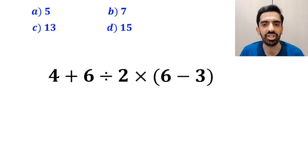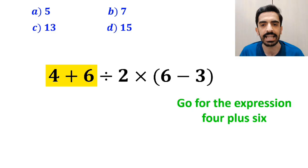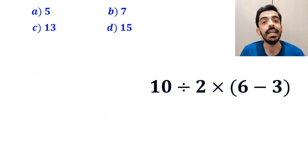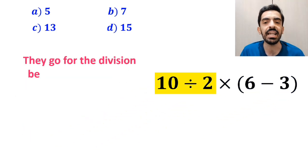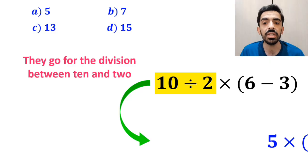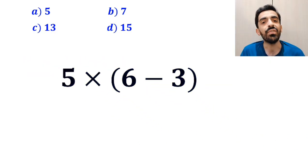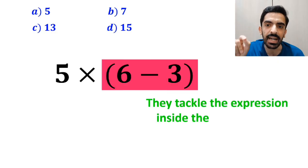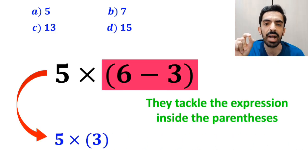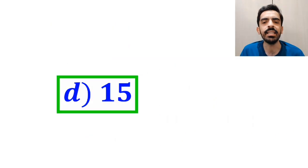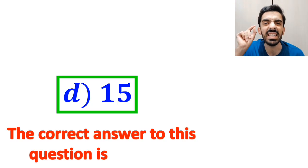Many people when solving this question first go for the expression 4 plus 6 and rewrite this expression as 10 divided by 2 times 6 minus 3 inside the parenthesis. In the next step, they go for the division between 10 and 2, and this expression simplifies to 5 multiplied by 6 minus 3 inside the parenthesis. In the final step, they tackle the expression inside the parenthesis and rewrite it as 5 times 3, which ultimately gives them the answer 15. Then, without any hesitation, they quickly say that the correct answer to this question is option D.